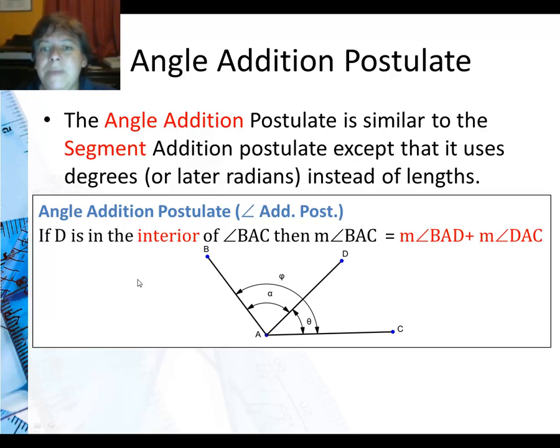So what it means is if D is in the interior of an angle, so here is our angle BAC, and if I put some point somewhere inside of this angle, then this part of the angle plus that part of the angle when I add them together has to equal the entire angle. Which makes sense. The sum of the pieces should add up to the whole.